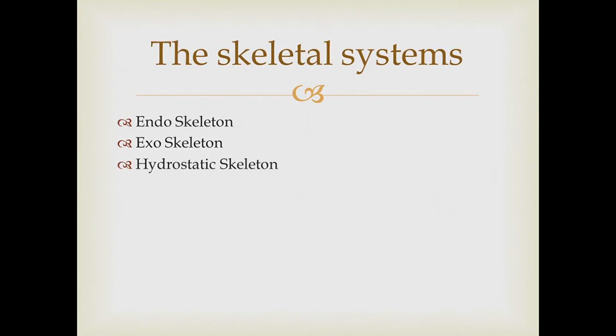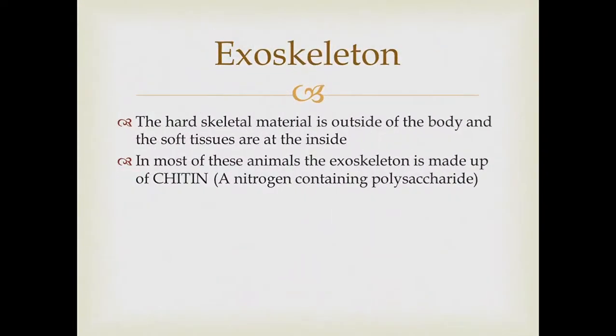The exoskeleton means the hard skeletal material is outside of the body, and the soft tissues like connective tissues and muscle tissues are on the inside. In most of these animals, the exoskeleton is made up of chitin, which is a nitrogen-containing polysaccharide — a large, compact, insoluble complex molecule formed by glycosidic bonds joining monosaccharides together. Chitin is a strong polysaccharide containing nitrogen, used as a cell structure.